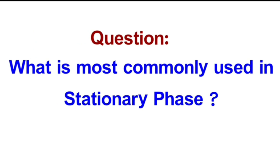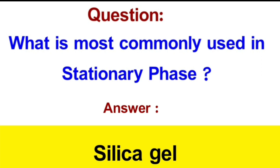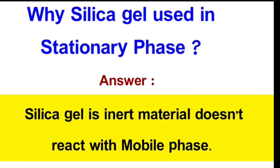Question: What is the most commonly used stationary phase? Answer: Silica gel. Question: Why is silica gel used in stationary phase? Answer: Silica gel is an inert material.